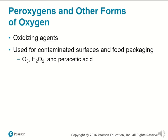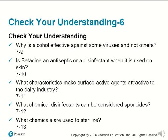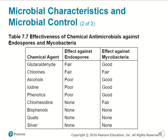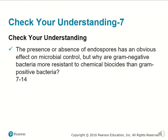Peroxygens and other forms of oxygen are excellent oxidizing agents that can be used for contaminated surfaces and food packaging. Forms of oxygen that are deadly to microbes include ozone (O3), hydrogen peroxide, and peracetic acid. Finally, a chart of microbial characteristics shows a wide variety of chemicals, their effect on endospores, and their effect against mycobacteria. That concludes this lesson on Chapter 7 and techniques to control the growth of microbes.